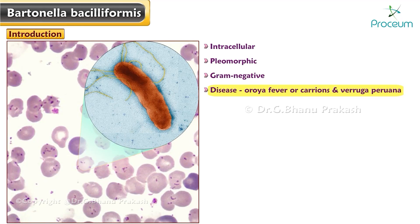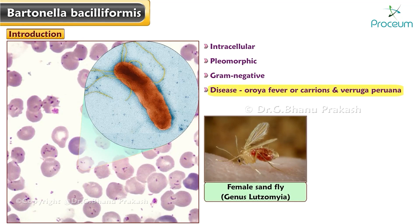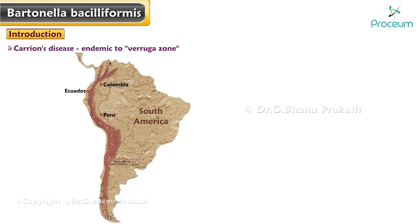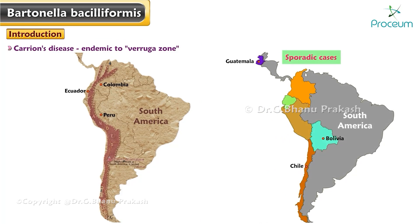Bacilliformis is transmitted by the bite of the female sandfly of the genus Lutzomyia. Carrion's disease is endemic to the Peruvian zone, a region in the Andes Mountains of Peru, Colombia, and Ecuador, but new emerging areas have been described in these countries. Sporadic cases have been reported from Bolivia, Chile, and Guatemala.